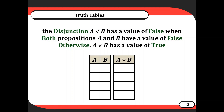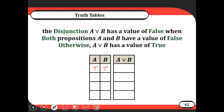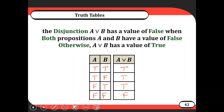The disjunction A OR B has a value of false when both A and B are false; otherwise it has a value of true. Filling in all combinations: true OR true is true, true OR false is true — like one plus zero equals one. False OR true is true, and false OR false is false — like zero plus zero equals zero.